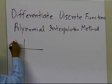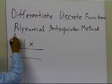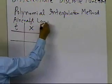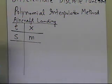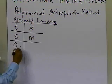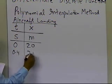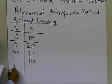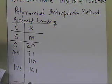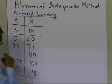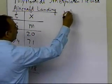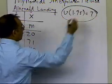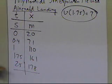Let's suppose somebody gives you the location of an aircraft landing — maybe you can imagine this is an emergency aircraft landing. You're given the value of time in seconds and the location of the aircraft in meters: at 0 it's 20, at 0.4 it is 71, at 1 it is 110, at 1.75 it is 161, and at 2.5 it is 178. What we want to do is use polynomial interpolation to find out what the velocity at t=1.75 is.